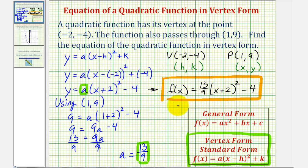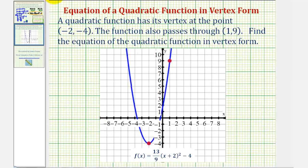Let's go ahead and verify this by looking at the graph of our quadratic function. Here's our graph. Notice how the vertex does have coordinates negative two comma negative four, and this parabola also passes through the point here with coordinates one comma nine, which verifies our quadratic function is correct.